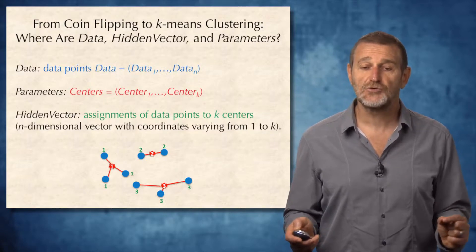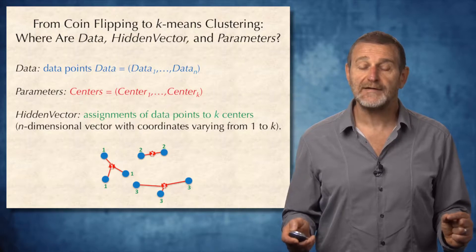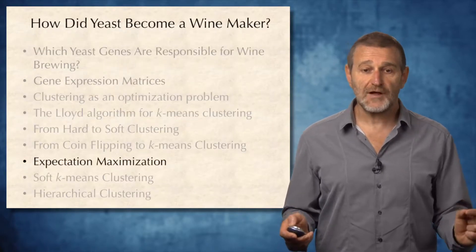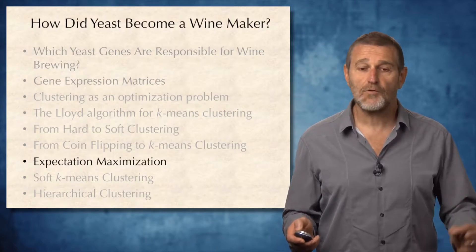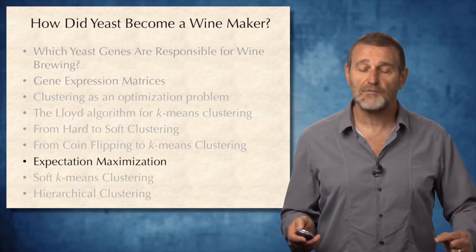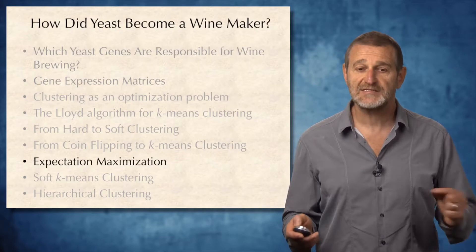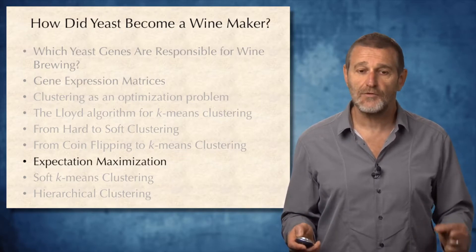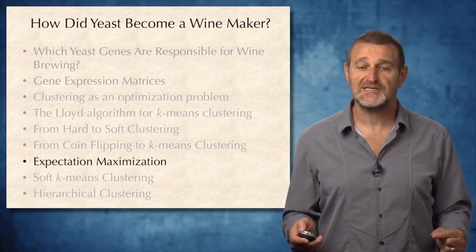This assignment hidden vector is shown below by green coordinates. So we figured out how to solve the coin flipping problem and what relationship it has to k-means clustering. And now we'll talk about a more general approach called expectation maximization.